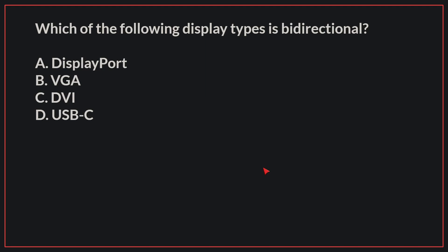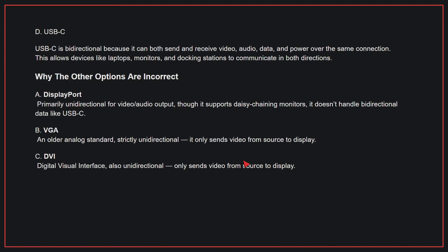Which of the following display types is bi-directional? The correct answer is D, USB-C. USB-C is bi-directional because it can both send and receive video, audio, data, and power over the same connection. This allows devices like laptops, monitors, and docking stations to communicate in both directions.